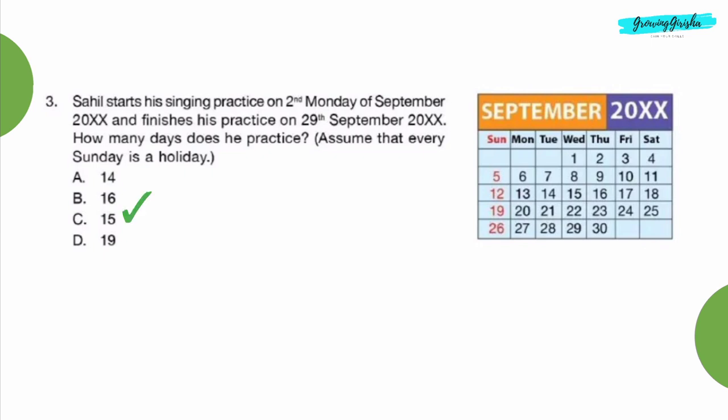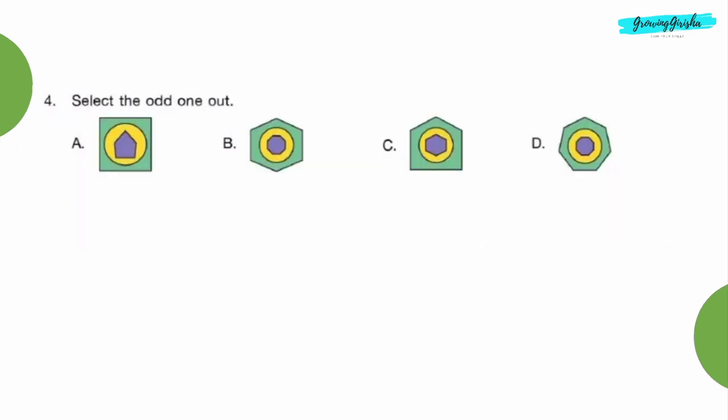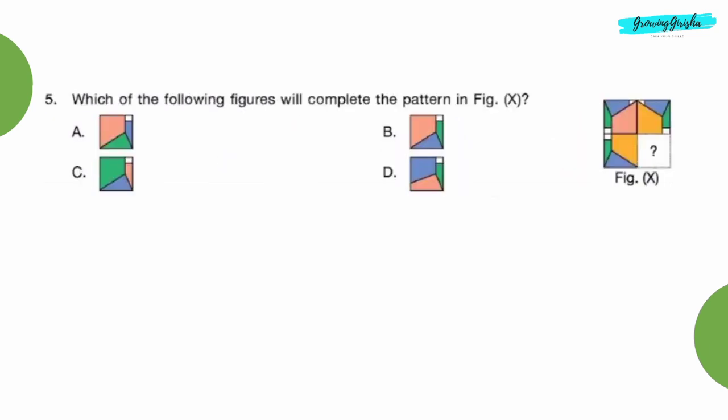Question 4: Select the odd one out. Option B. Question 5: Which of the following figures will complete the pattern in figure X? Option B.